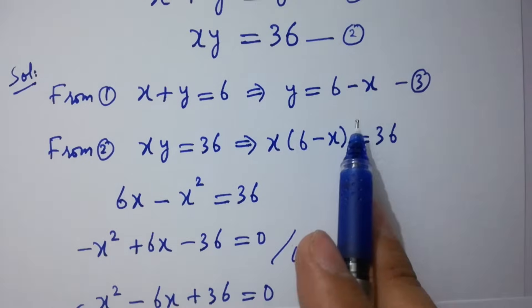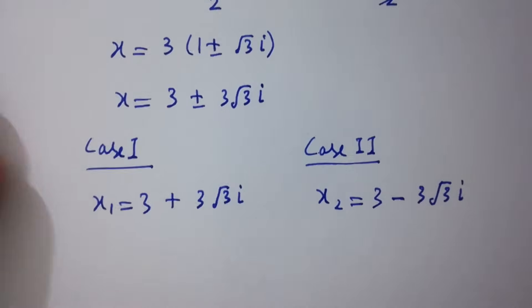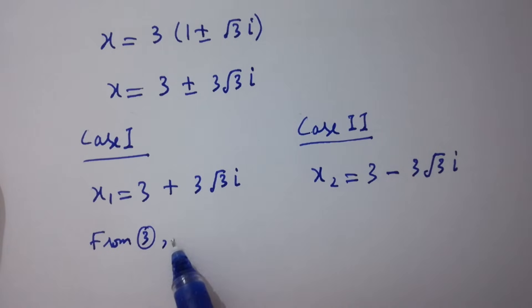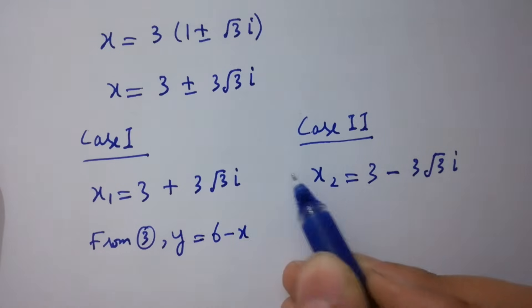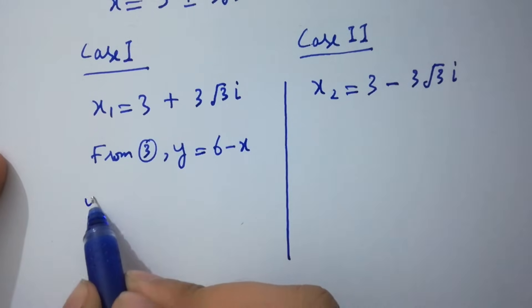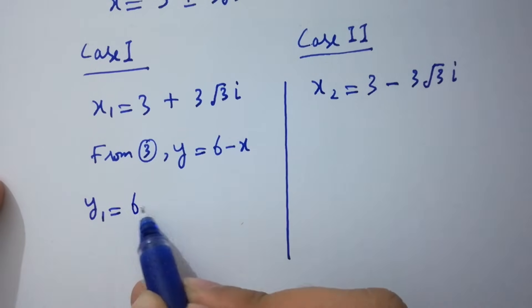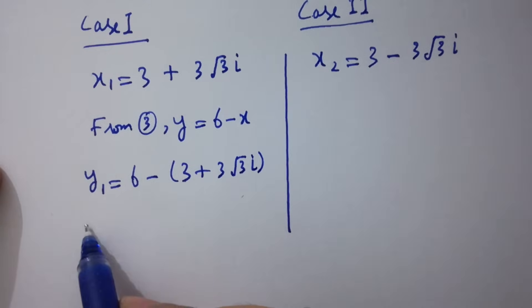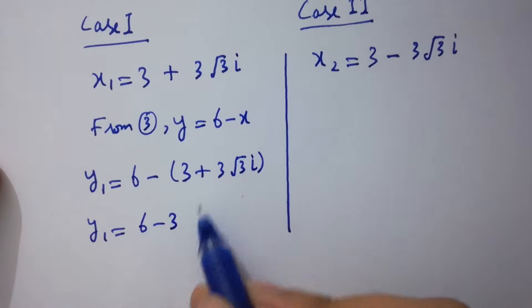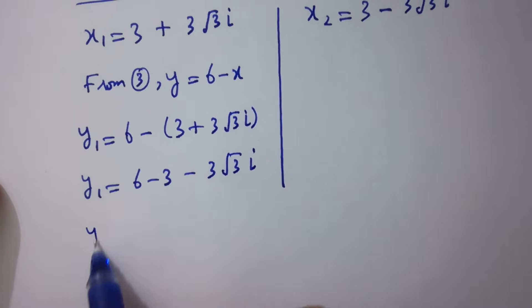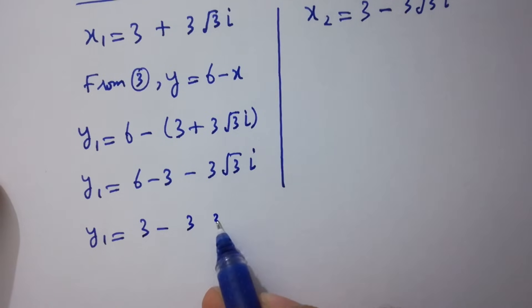From the third equation, y equals 6 minus x. For x₁, y₁ equals 6 minus (3 plus 3 times square root of 3 times i), which gives y₁ equals 3 minus 3 times square root of 3 times i.